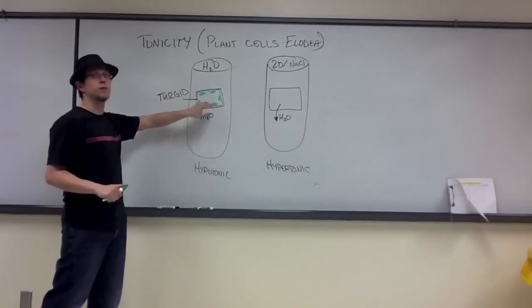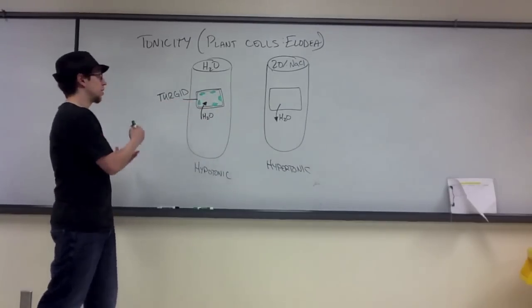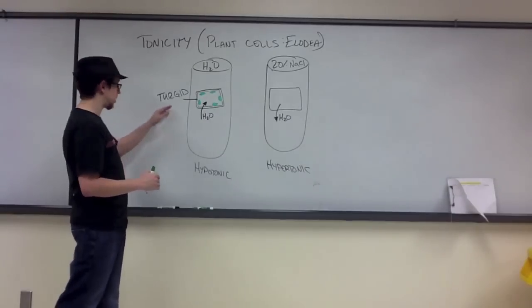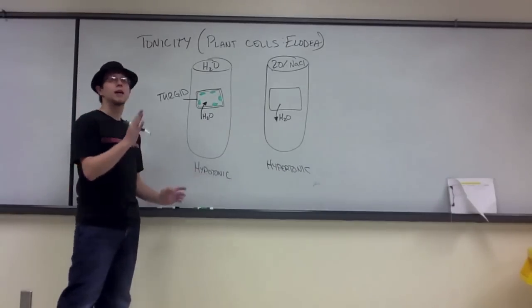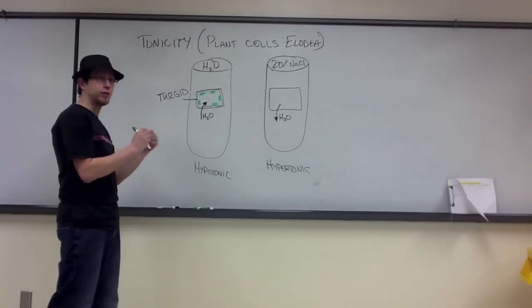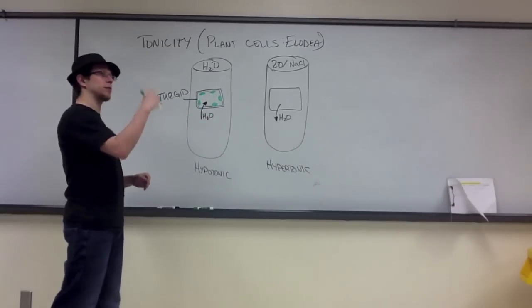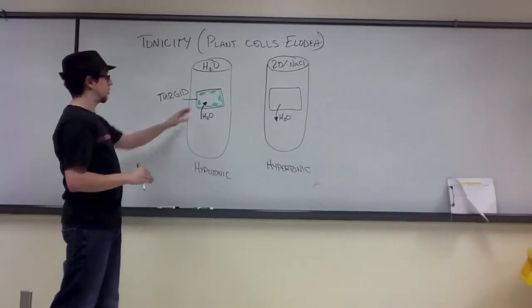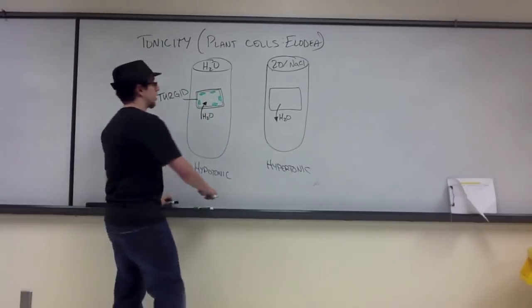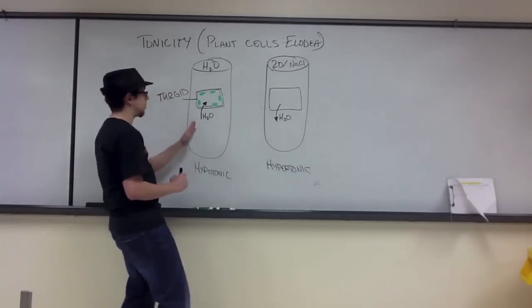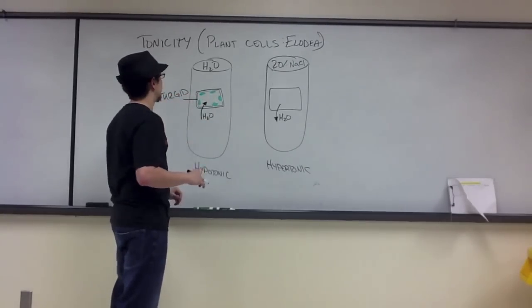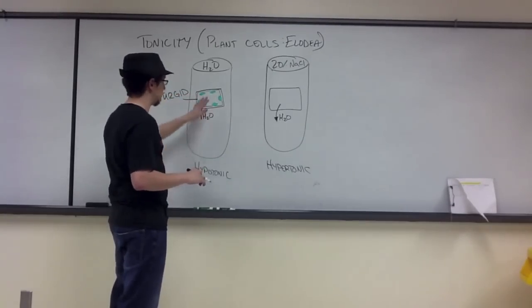A hypotonic solution results in this turgid state, and this turgid state is actually the state in which most plants have their cells — it's good for the plant. If plants are placed in an isotonic solution, typically the osmotic pressure inside the cell decreases, resulting in the plant wilting. So the turgid state is the preferential state for most plant cells, because water moving in adds additional pressure to the plant cell.